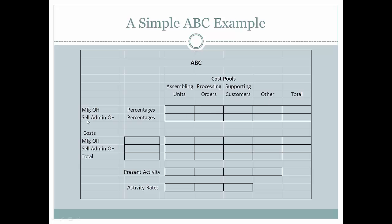We have two different overhead pools that we're looking at: manufacturing overhead and selling and administrative overhead. Remember, ABC is primarily related to the allocation of overhead into individual cost pools based upon percentages gained from interviewing the individual people involved in each one of these individual departments. We're going to collect the costs, take the percentages, multiply them by the individual costs, and calculate activity rates.